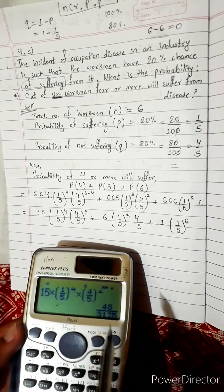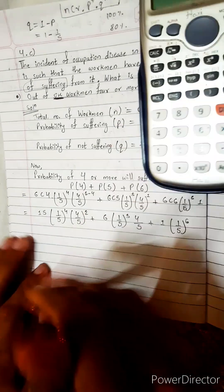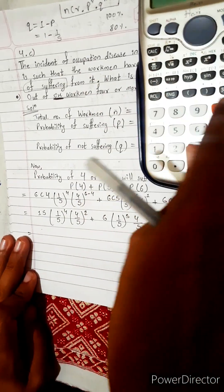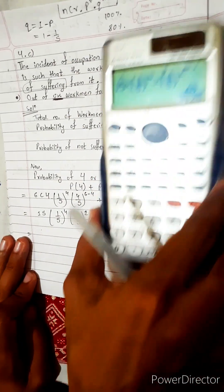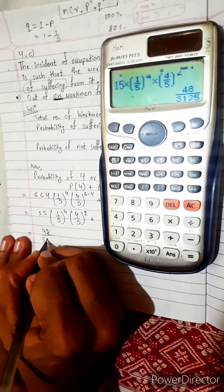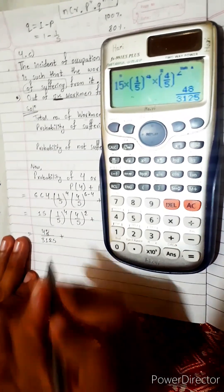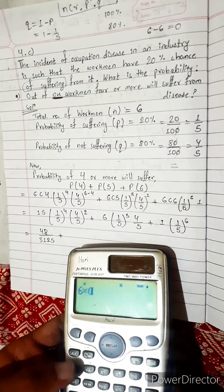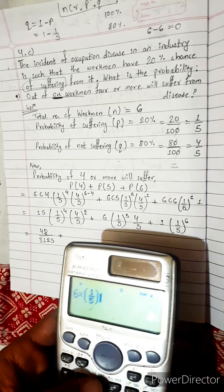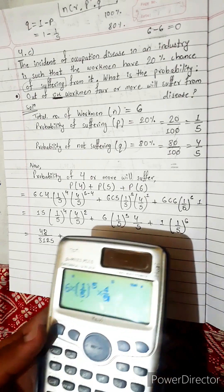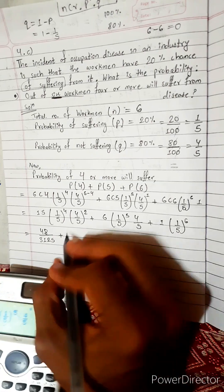Look here, this is 48 by 3125, so directly we should write. No need to use extra mind. And look, 48 divide by 3125. Plus now for this also, 6 multiply by 1 by 5 power 5 into 4 by 5.